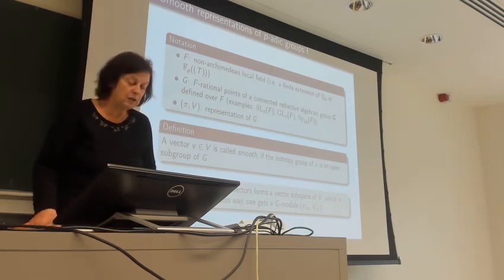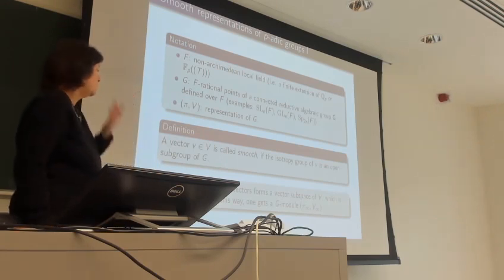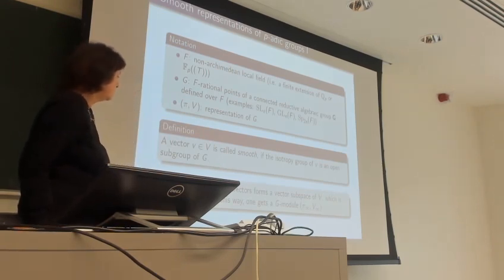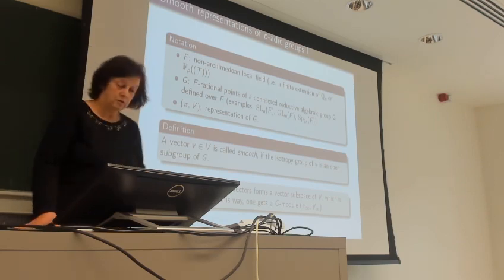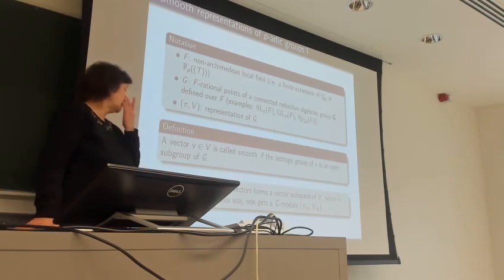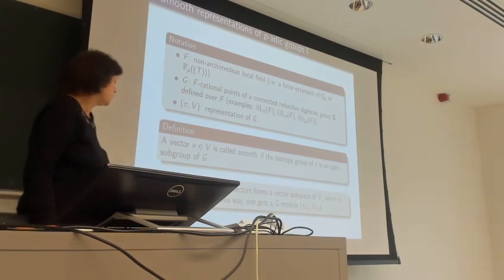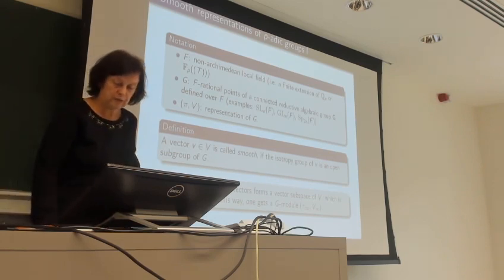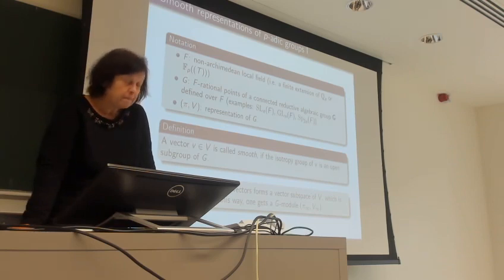I will fix a representation (pi, V) of the group G. A vector is called smooth — as I briefly explained yesterday — if its stabilizer, meaning the subgroup of elements of G which fix that vector, is an open subgroup of G.